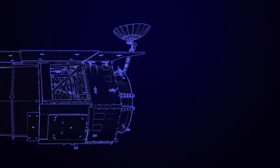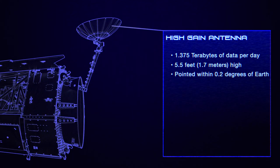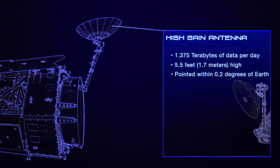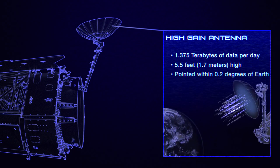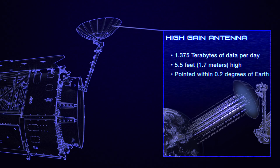At Roman's back is its primary means of communication with Earth, the high-gain antenna. This antenna will be responsible for sending nearly 1.4 terabytes of data to ground stations every day. That's the equivalent of 460 hours of streaming video.